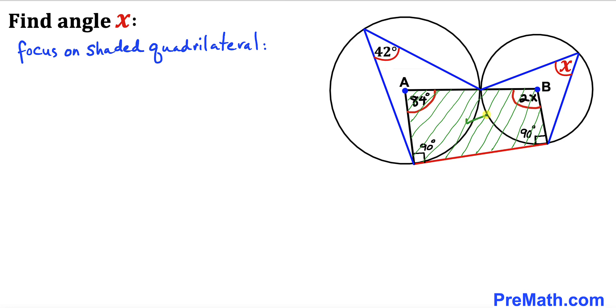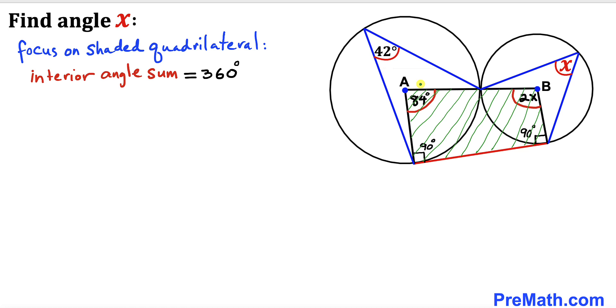Let's focus on this shaded quadrilateral. The sum of all interior angles in this quadrilateral must be 360 degrees. Let's add all four angles: 2x + 84° + 90° + 90° = 360°.